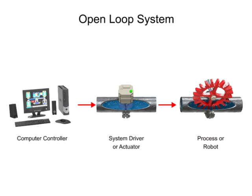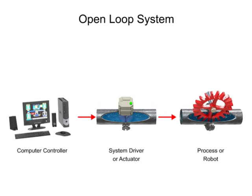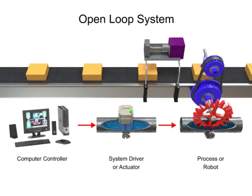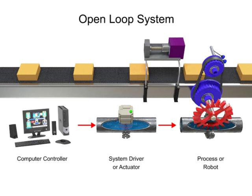The term process in this illustration simply means any piece of equipment that accomplishes work. This could be a robotic arm, a motor, or an engine. For the purposes of this module, we'll focus on robots. Once the signal is received, the robot performs the appropriate action.